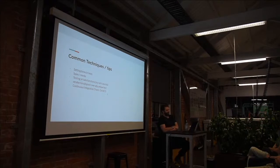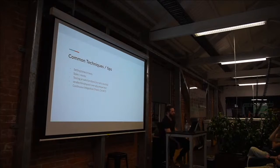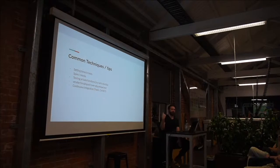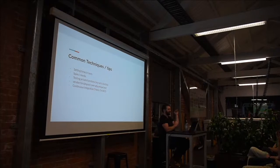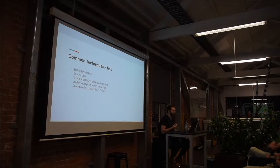And then finally, continuous integration. For those that have CI set up, there are two tools out there called Travis and Circle CI. Essentially when you do a merge request to master, if you set it up that way, Travis will boot up, build your Laravel application, run all those tests. And then if all the tests pass, it will notify GitHub and there's an option where the merge button only becomes clickable if all your tests actually passed. It makes it almost impossible to push out code that is failing unit tests.